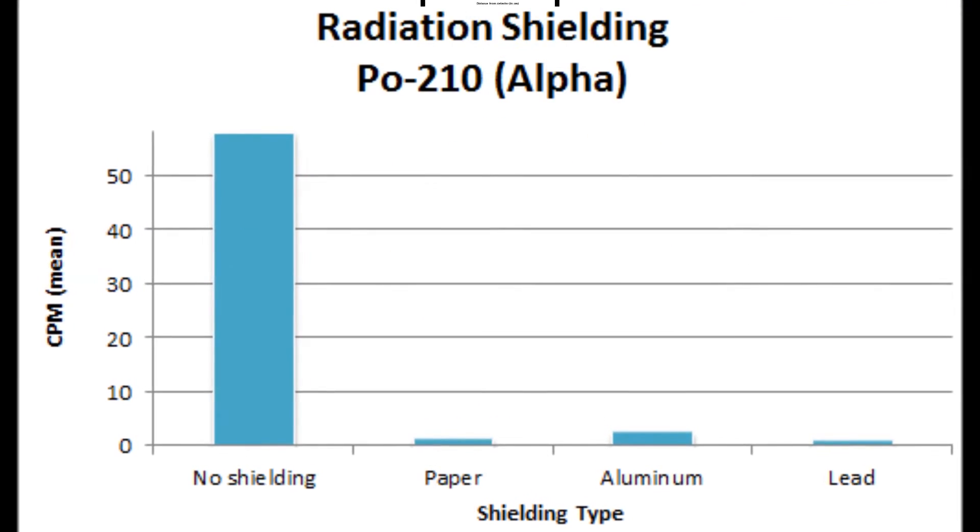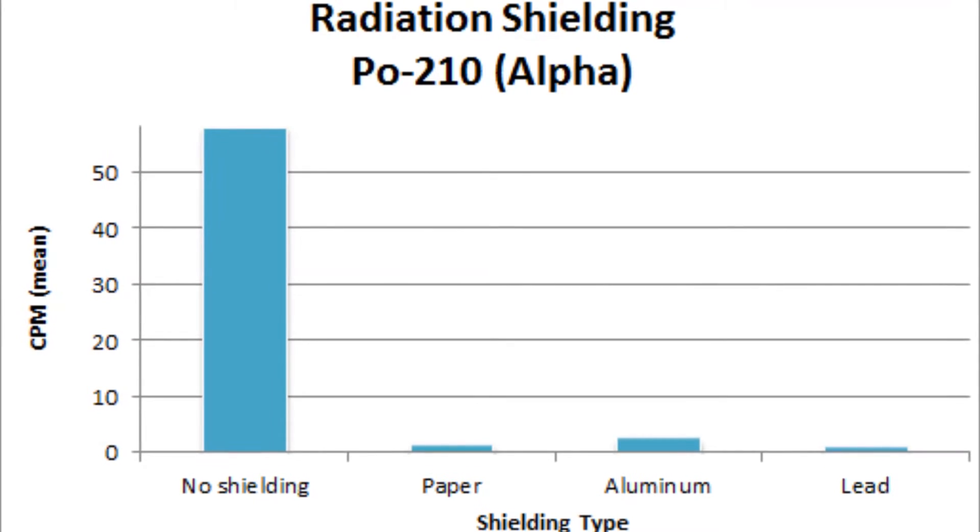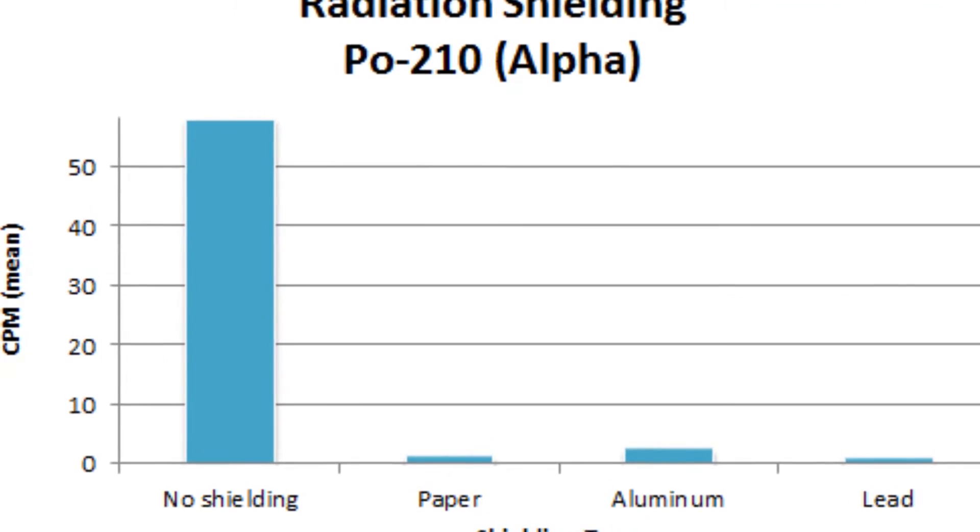Source SR90 beta radiation had an even higher CPM and was able to penetrate through paper, but it was then stopped by the aluminum, the second thickest shielding material.